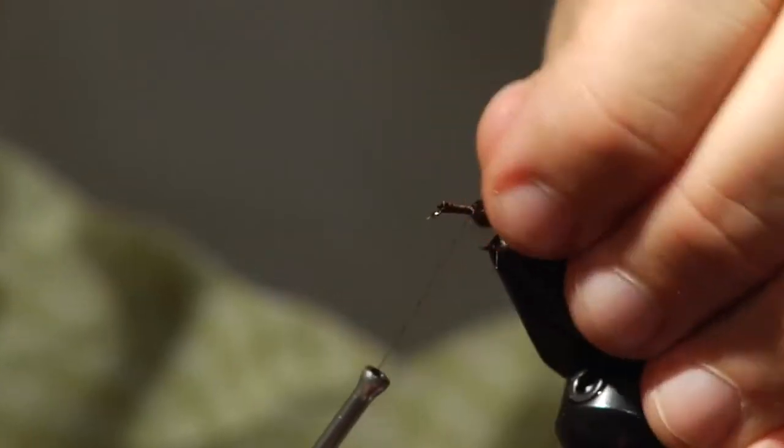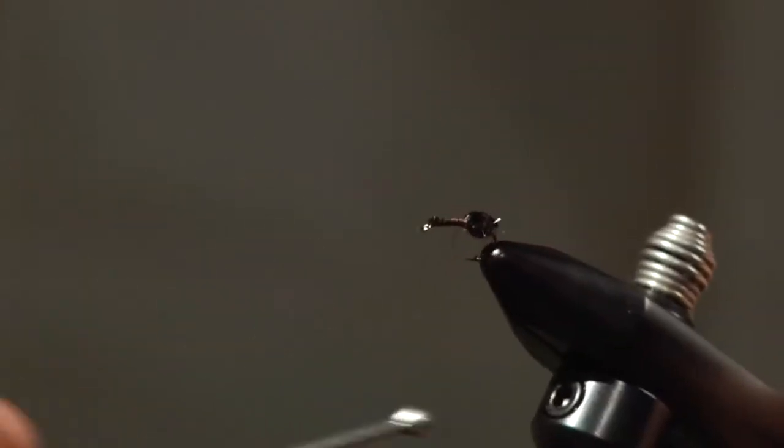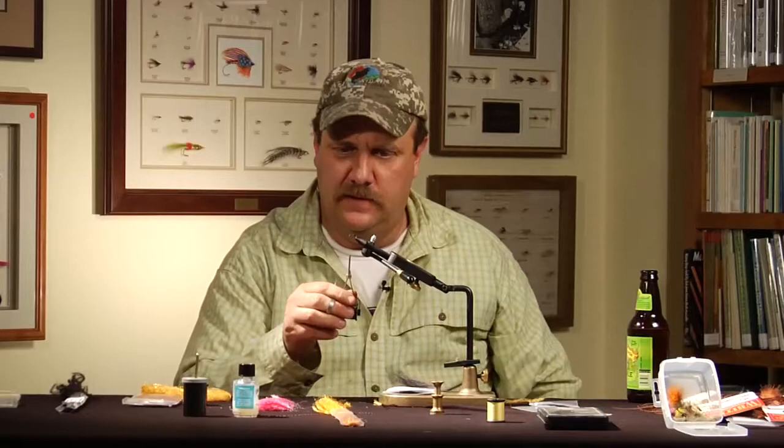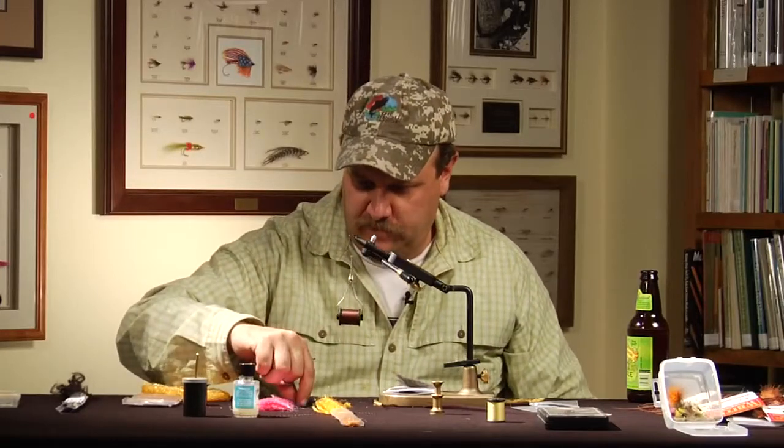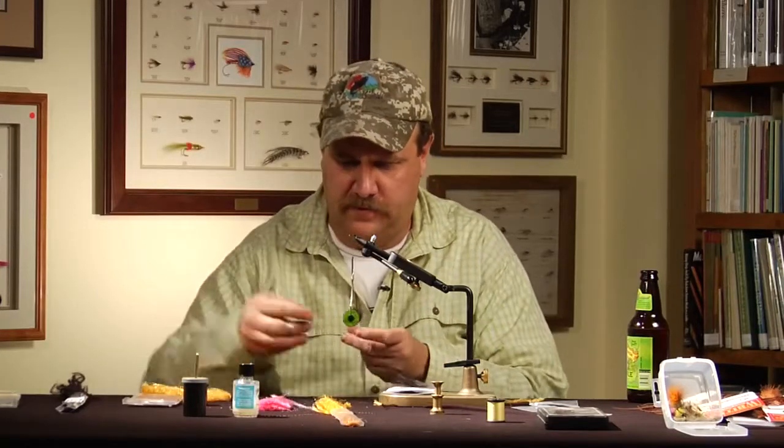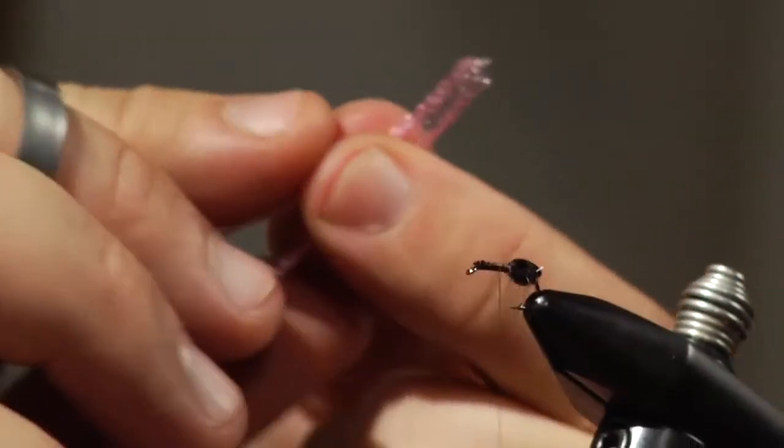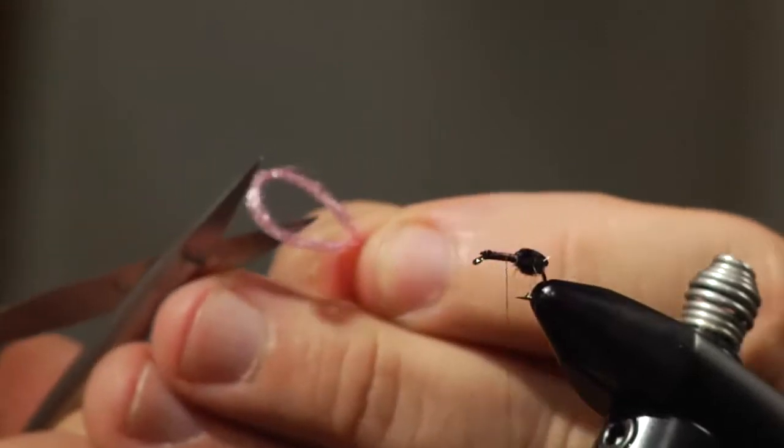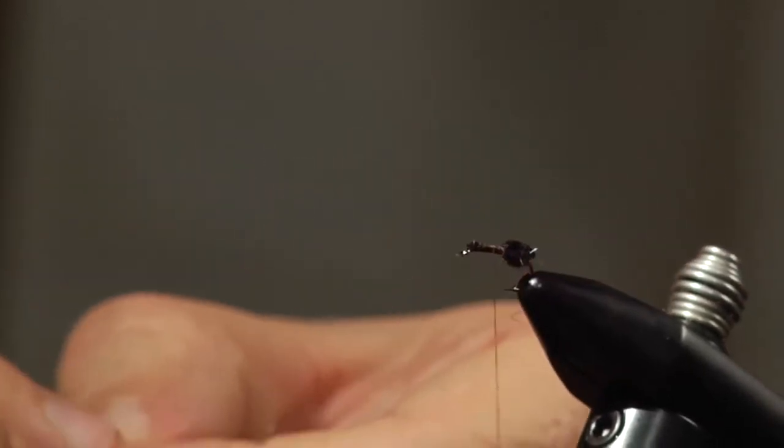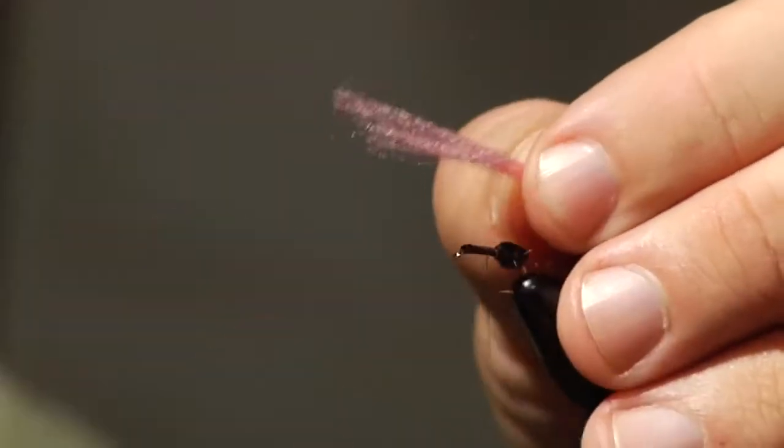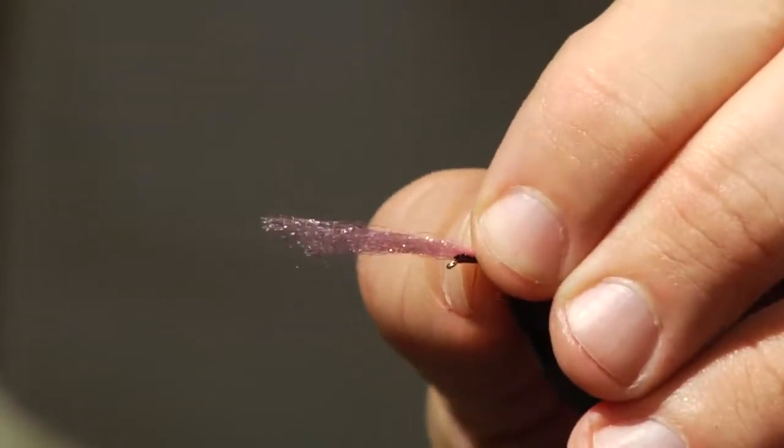I'm just going to make sure that's real distinct there. And I'm going to come right to mid-shank or so. Grab some antron for the post. I'm going to double that in half, cut it, and I'm going to tie that thing in with at least four or five wraps.